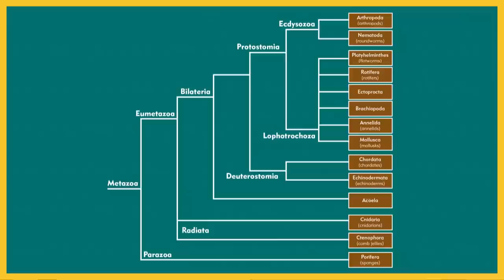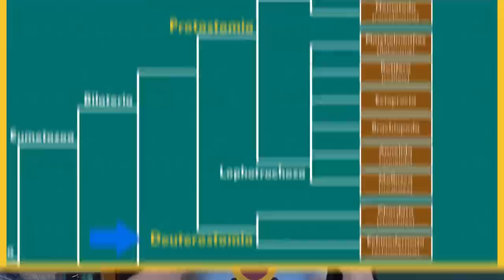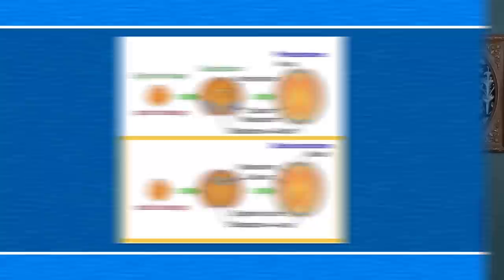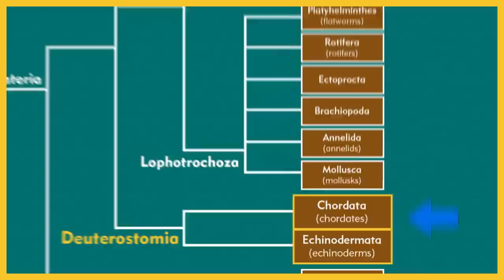The rest of the invertebrates all have true tissues and bilateral symmetry, with a couple of exceptions. The next split in the tree is between protostomes and deuterostomes, which refers to what happens in development. Protostomes have a blastopore that becomes the mouth, and deuterostomes have that blastopore become the anus. You can always remember it because deuterostomes sounds like 'duty,' which reminds us of butt. This split moves chordates, like us, and echinoderms, like starfish, away from the rest of the invertebrates — kind of neat that some of our closest animal relatives look like that.